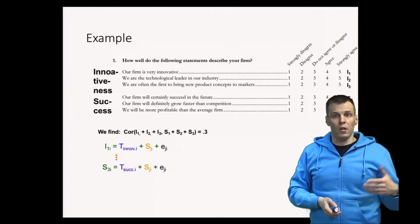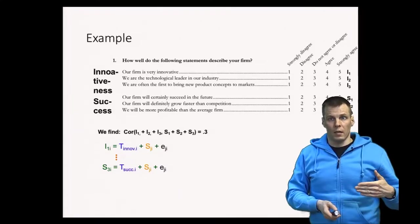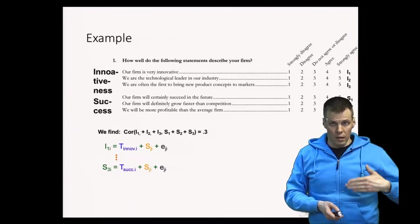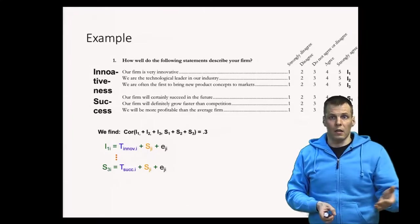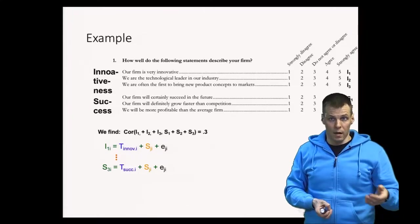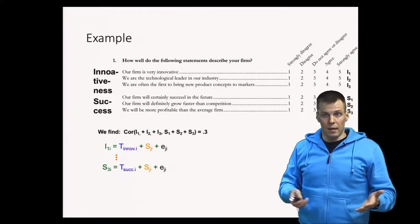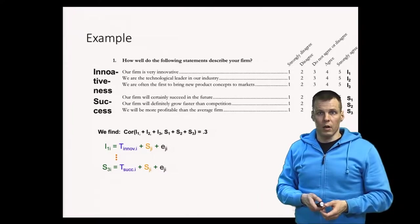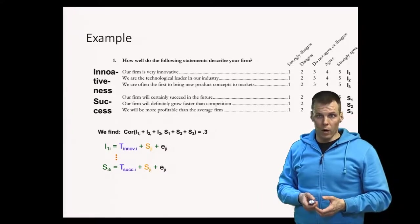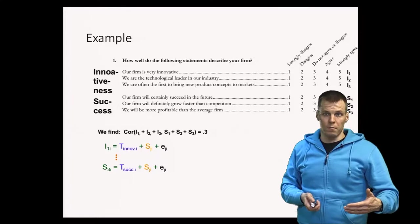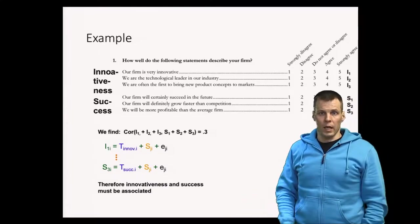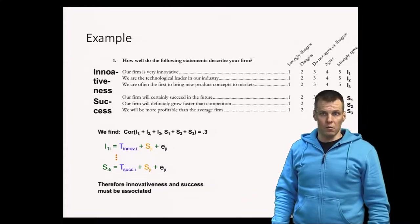We find a correlation of 0.3. We know that random measurement error attenuates correlations, so we claim that the real correlation could actually be as high as 0.4, and then we make grand claims about innovation being one of the key drivers of success.